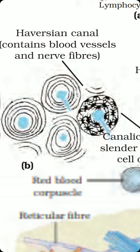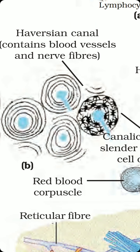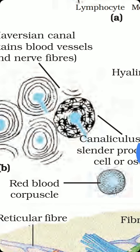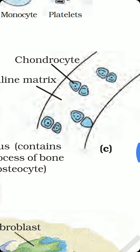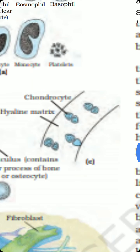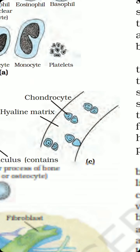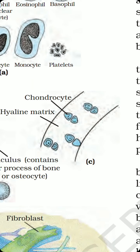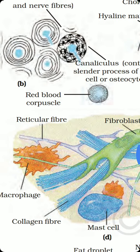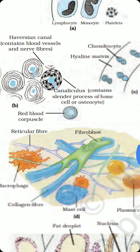The canaliculus contains the cylinder process of bone cells, or osteocytes. The star-shaped black structures on the border of the blue center represent the Haversian canal. In another panel, the structure of cartilage is shown — cartilage cells are known as chondrocytes, just like bone cells are called osteocytes. Because cartilage consists of a hyaline matrix, it is referred to as hyaline cartilage.